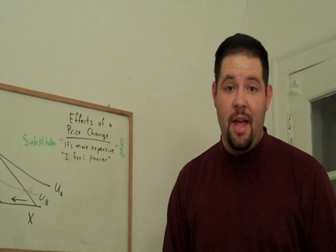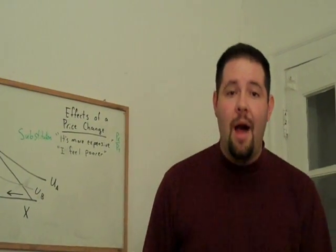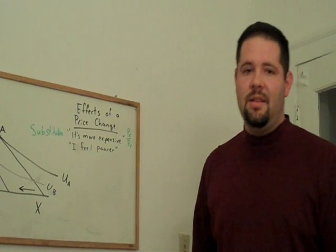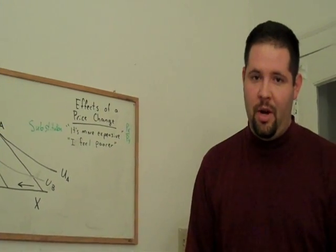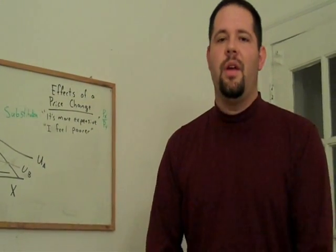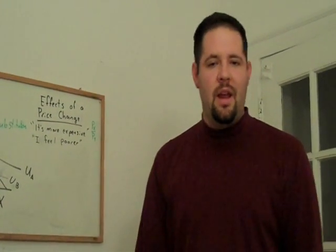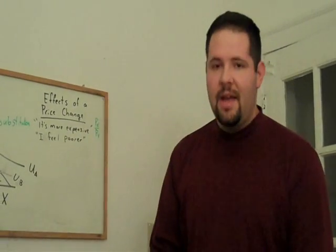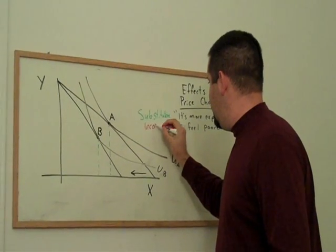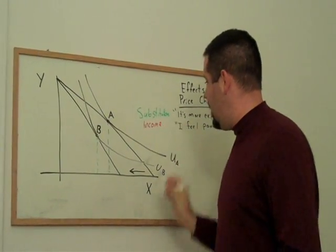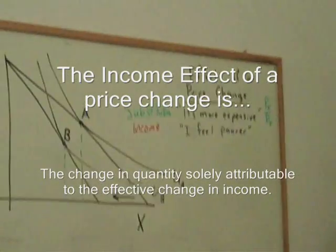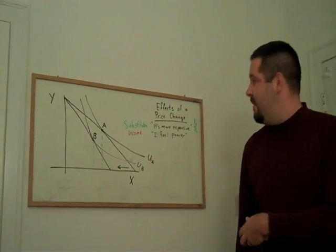Now, suppose your landlord doubled your rent — you'd really feel poorer. And that embodies this second effect of a price change. The price goes up; it feels like that price going up is just taking money right out of your pocket. And so that is the second effect of a price increase, or just a price change more generally. That is the income effect. So we have an income effect and a substitution effect.